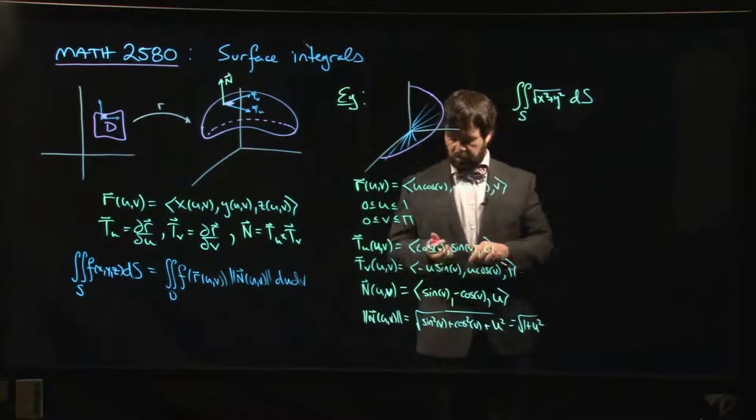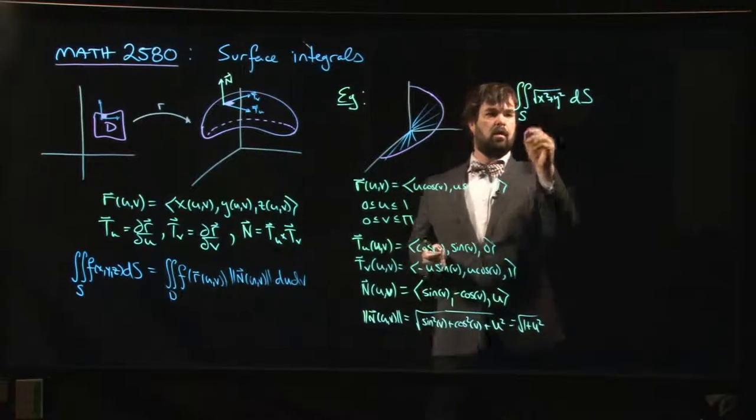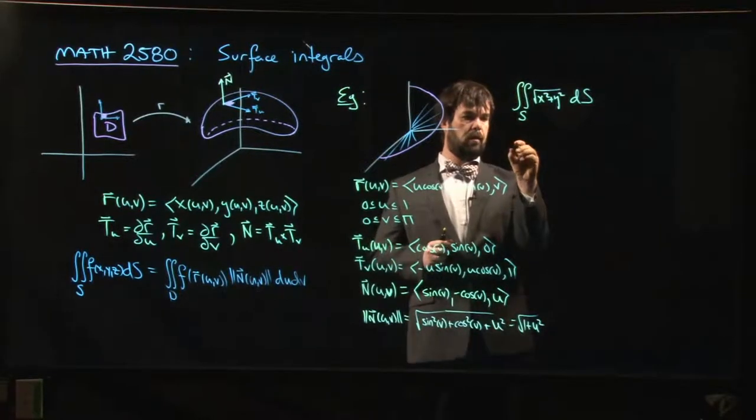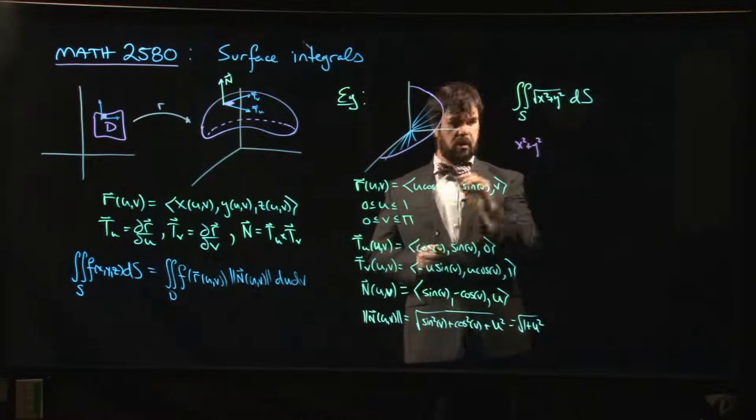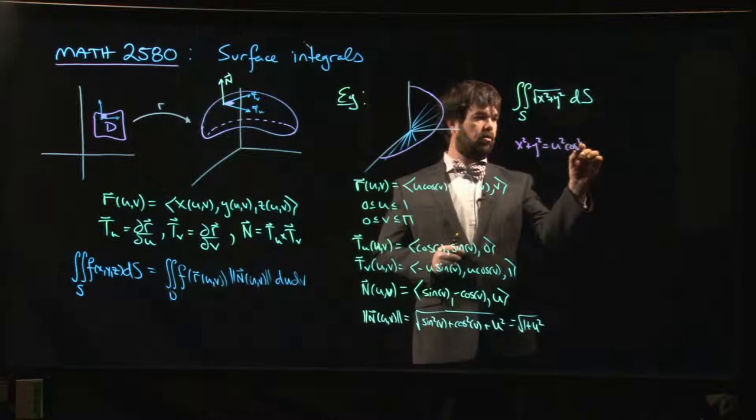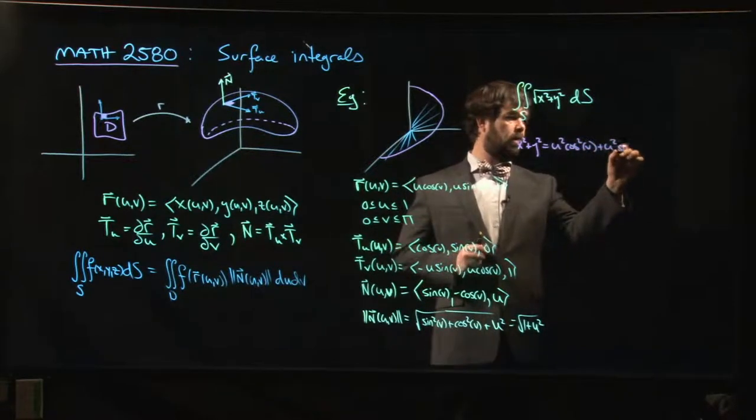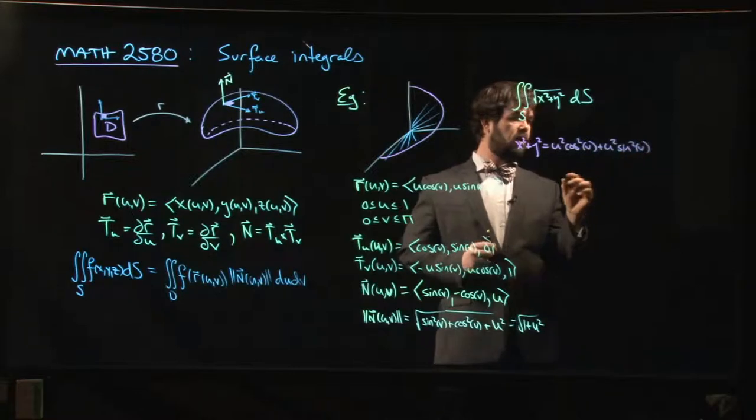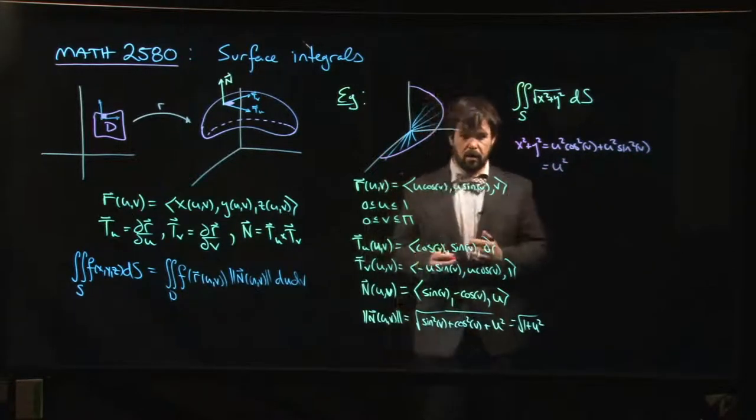So we're almost ready to do the integral. The other thing we might want to notice is that with this parametrization, x squared plus y squared is going to be u squared cos squared v plus u squared sin squared v, which is u squared.